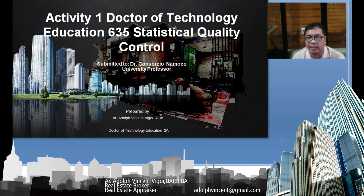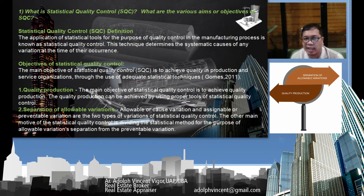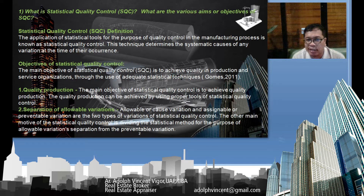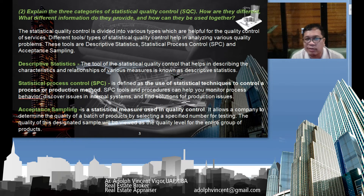I'm going to present my activity one for the Doctor of Technology Education Program — Statistical Quality Control. The first question: what is statistical quality control and what are the various aims? Statistical quality control is the application of statistical methods for the purpose of quality control in the manufacturing process. It has two main objectives: quality production and the separation of allowable variations. The three categories of SQC provide different information and can be used together.